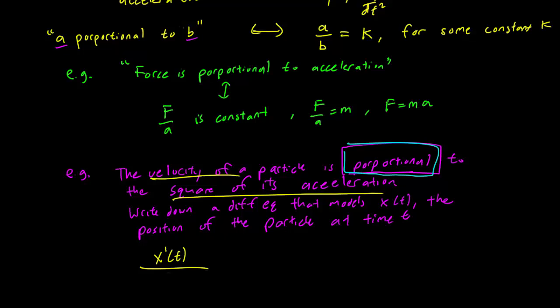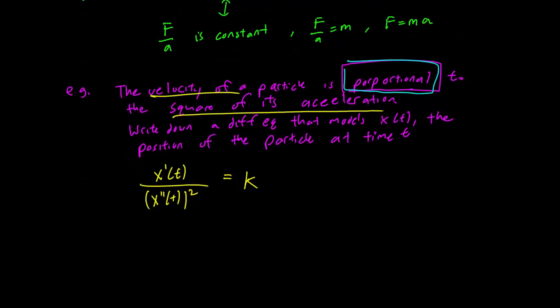and the square of the acceleration is in the bottom. This is proportional, so that means it's equal to a constant k. And this is the differential equation that models this position x. So we can also write it down as x'(t) equals k times x''(t) squared. This is our differential equation.